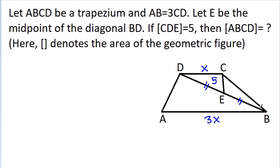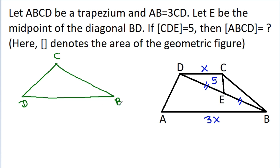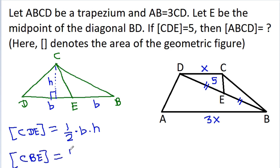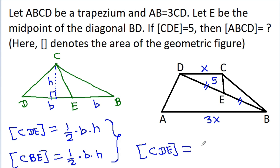So if we see triangle CDB — in triangle CDB, E is the midpoint of DB. And if we draw the perpendicular from C on DB, and suppose this height is H, then area of triangle CDE will be half times base DE times height H. And area of triangle CBE will be half times base BE times height H. So from these two equations, we can get area of CDE is equal to area of CBE.